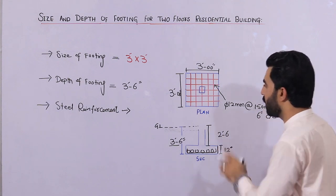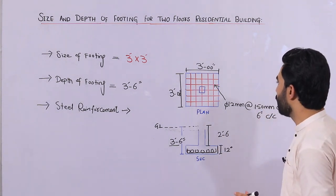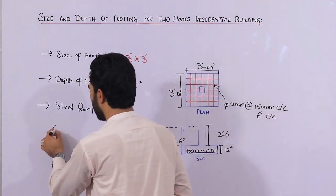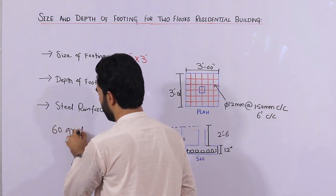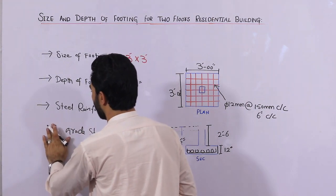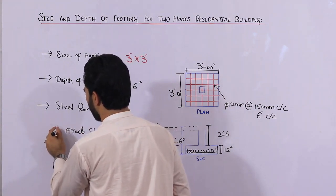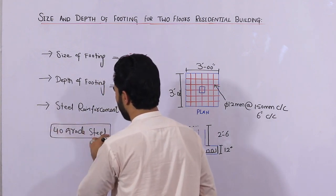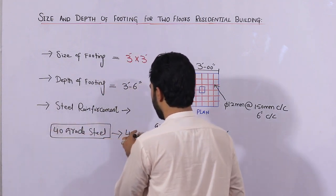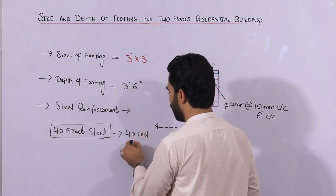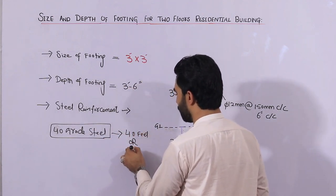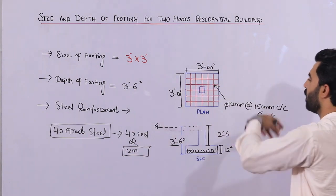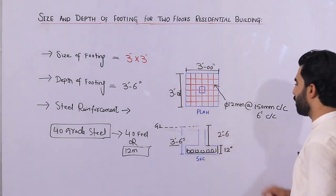This spacing of 150 mm c/c, or six inches c/c, is for both main bars and distribution bars. For a normal residential building you can use 40 grade steel rod. The standard length of a steel rod is 40 feet or 12 meters. These are the steel reinforcement details for both ways — for main bars and distribution bars.